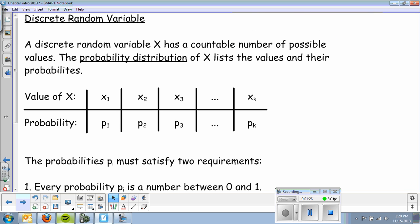Now, the next thing that we talk about is discrete random variable. A discrete random variable X has a countable number of possible values. The probability distribution of X lists the values and their probabilities. So this little table here is called a probability distribution.